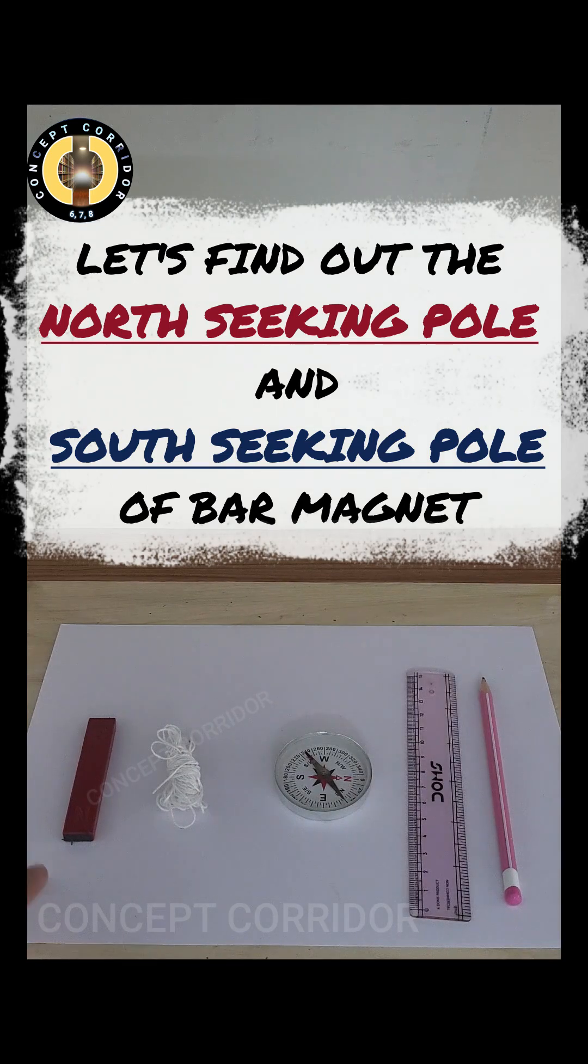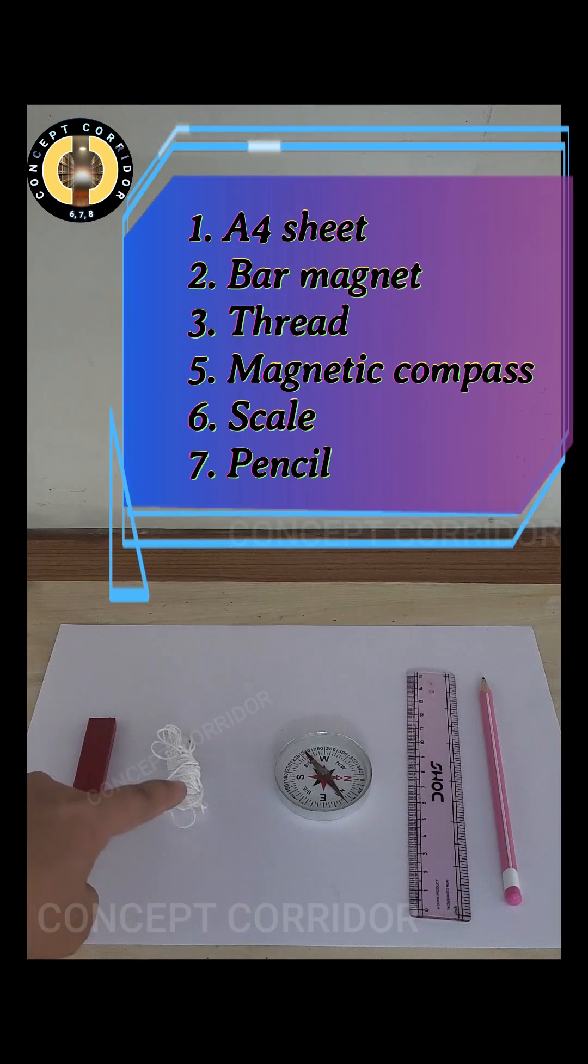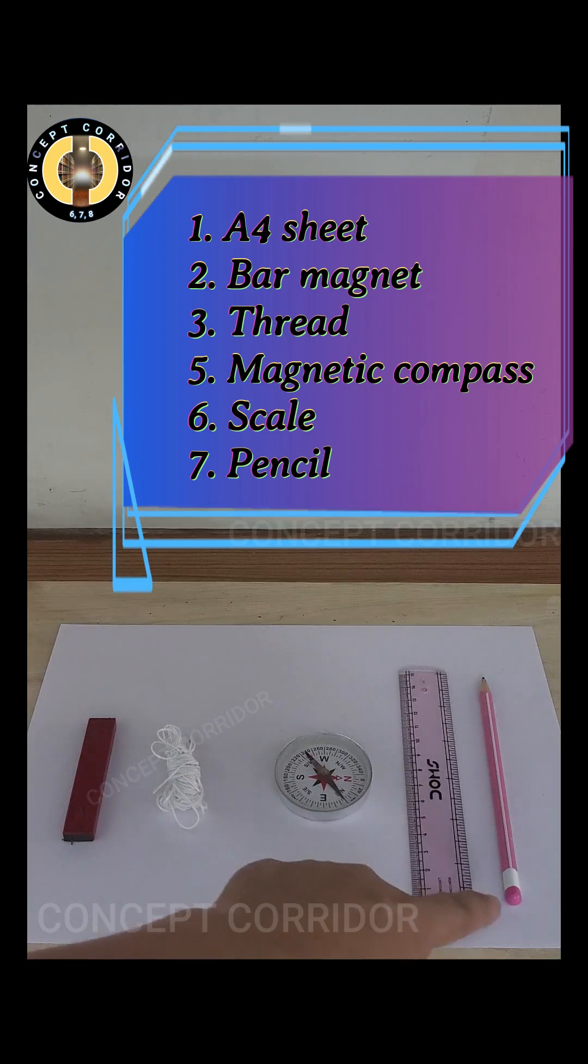For this activity we will require A4 sheet, bar magnet, thread, magnetic compass, scale and pencil.